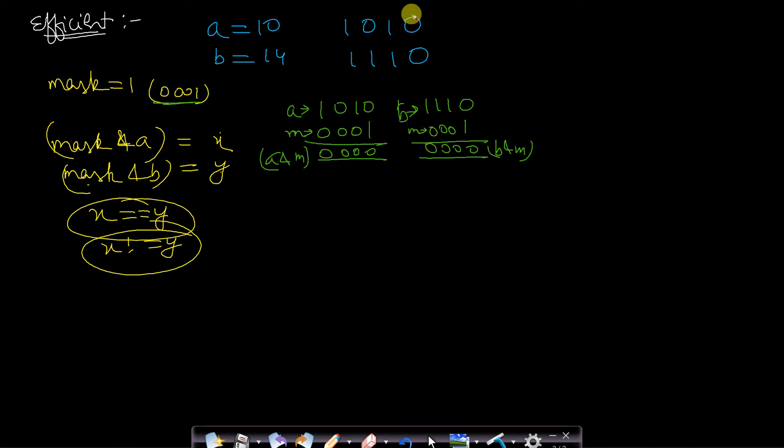That means the current bit which we are seeing are both the same. Now what we will do is just left shift the mask. So left shifting the mask by 1 bit is actually equal to multiplying it by 2. When we left shift the value of mask then it will equal 0010. Let us now perform the same operation by using 0010.